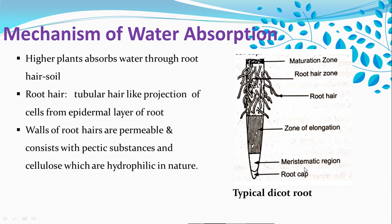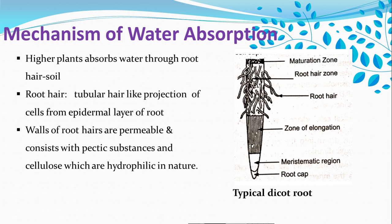The uppermost part, which is present towards the tip of the root, is called the meristematic region. It is the main growing region of the root, and in front of this root there is a protective structure called the root cap. Behind the meristematic region, there is the zone of elongation, and behind that is the root hair zone. The absorption of water mainly takes place through the root hair zone, which is immersed in the soil.